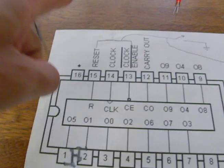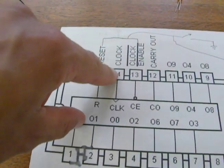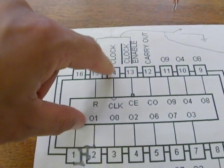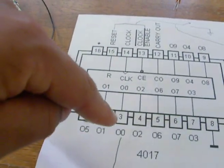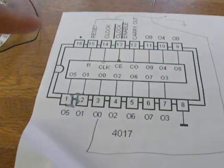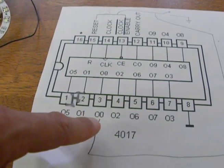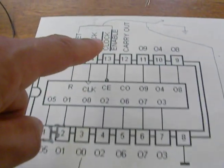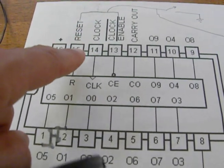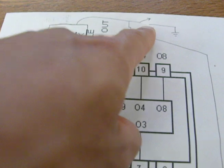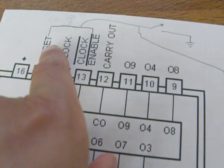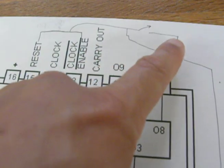What I did to make this thing go was I ran a 555 timer chip into pin 14 to give it a pulse, and I took pin 3 and ran it up to clock enable and to reset. I have a button that connects reset and clock enable to ground.